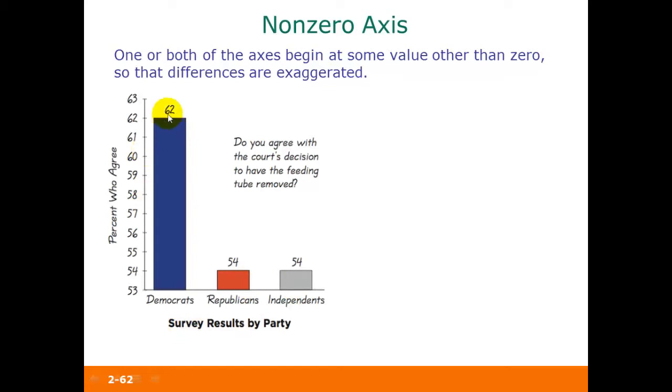If you actually look at the numbers, this is only 62% compared to 54% for both Republicans and Independents. Notice that the differences between those percentages are very much exaggerated because this vertical axis starts at 53 instead of starting at zero. This would be a case of a non-zero axis being used to exaggerate differences between values.